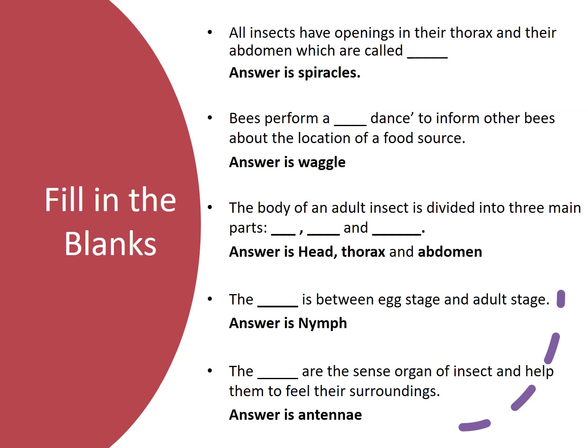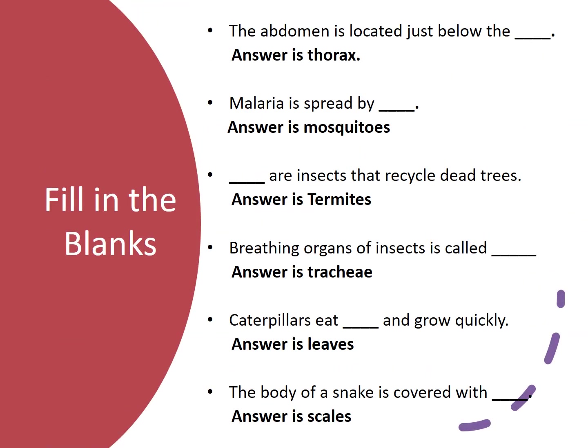The nymph is between the egg stage and adult stage. The antennae are the sense organs of insects and help them to feel their surroundings. The abdomen is located just below the thorax. Malaria is spread by mosquitoes. Termites are insects that recycle dead trees.